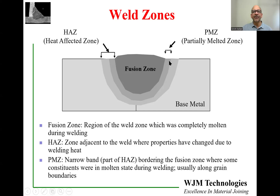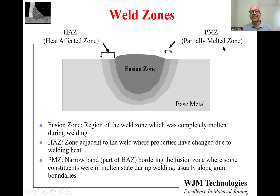The partially melted zone is a narrow zone right next to the fusion zone, within the heat affected zone. As the name implies, it is the zone where the entire material didn't melt, but part of it did. Usually what you see is the grains did not melt, but the grain boundaries can have low melting phases which did melt during the welding process.